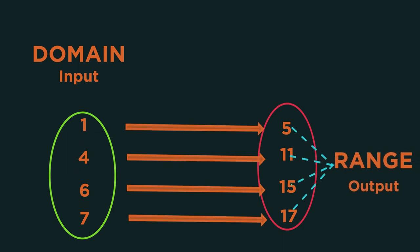The range are the output values from the function. So what comes out when we put our domain values in?